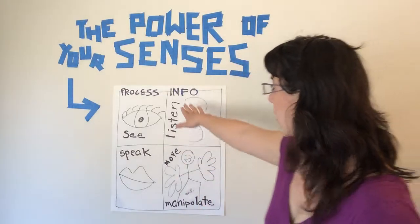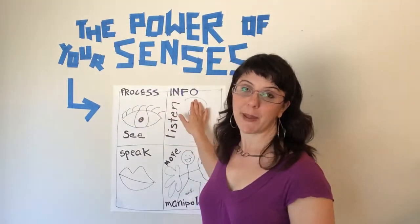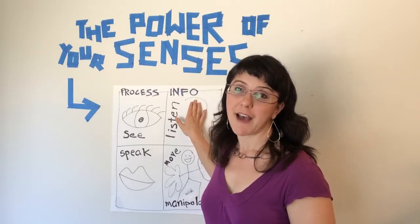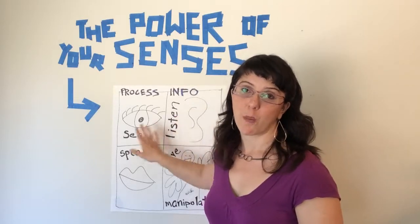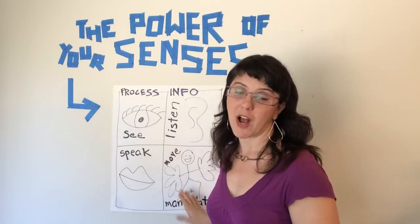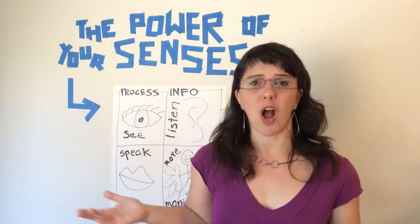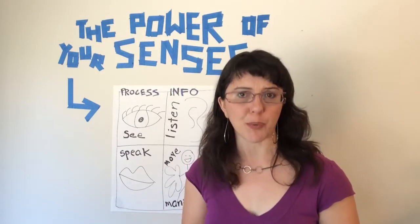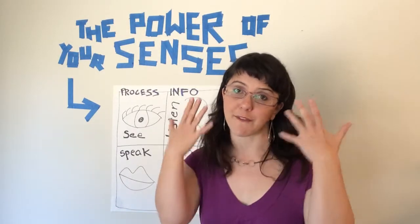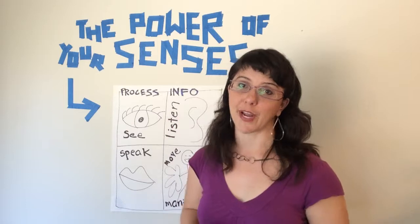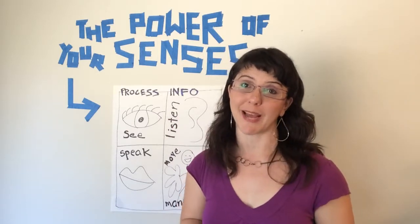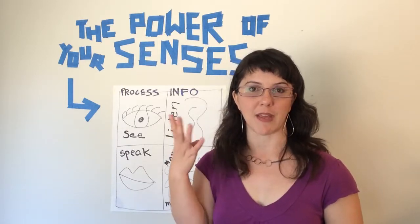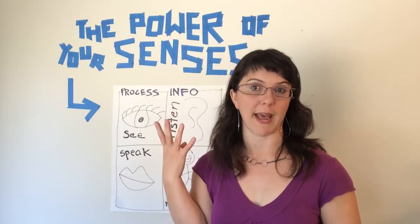Our brains process information in different ways. I found these four ways that we're about to talk about the most useful. There are other ways that our brains process information too — after all, the brain is a very complex organ. But for right now, let's just look at these four ways.